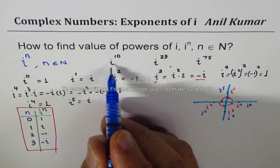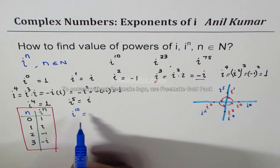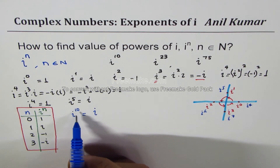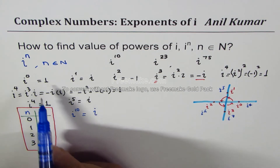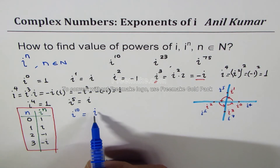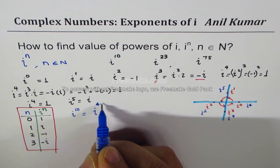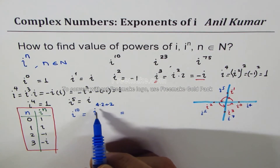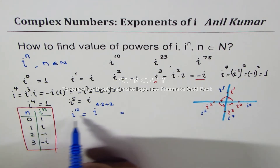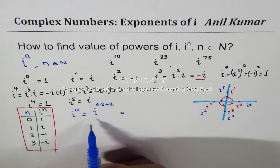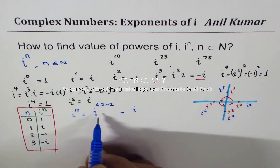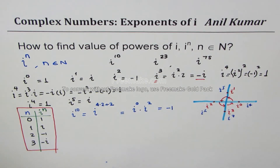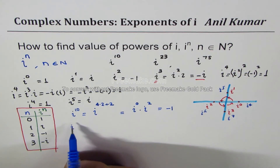Let's calculate i to the power of 10. We write 10 as 4 times 2 plus 2, so the remainder when dividing 10 by 4 is 2. Since i to any multiple of 4 is 1, i^10 equals i^2, which is minus 1. So i to the power of 10 equals minus 1.